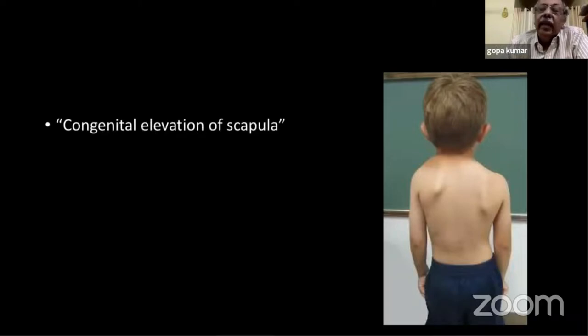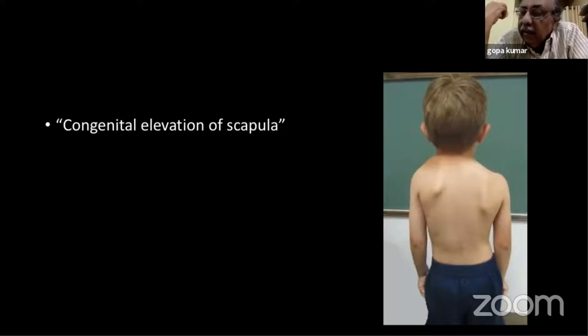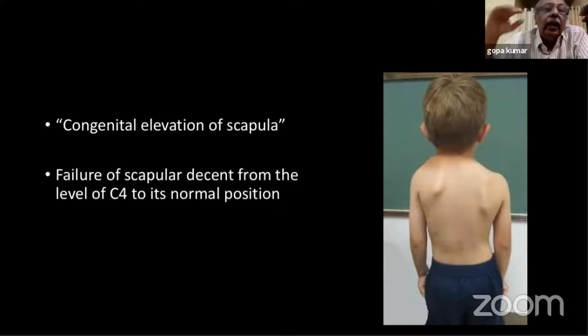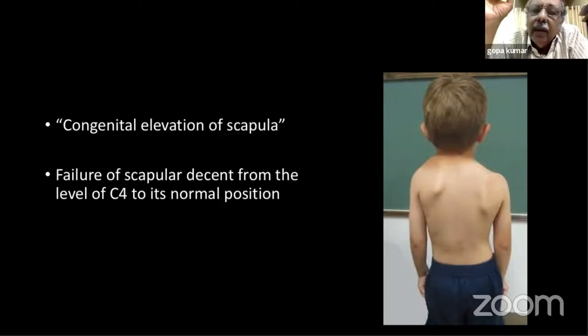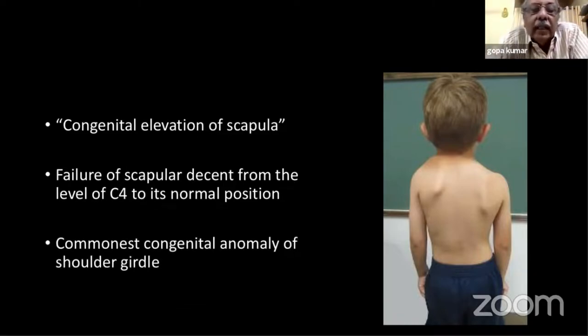Usually it will be a child presenting with this deformity — an elevated scapula. This is often called congenital elevation of the scapula, but this term is a misnomer because it is actually a failure of the scapula to descend from the level of C4 to its normal position. The normal position of the scapula is between T2 and T7.